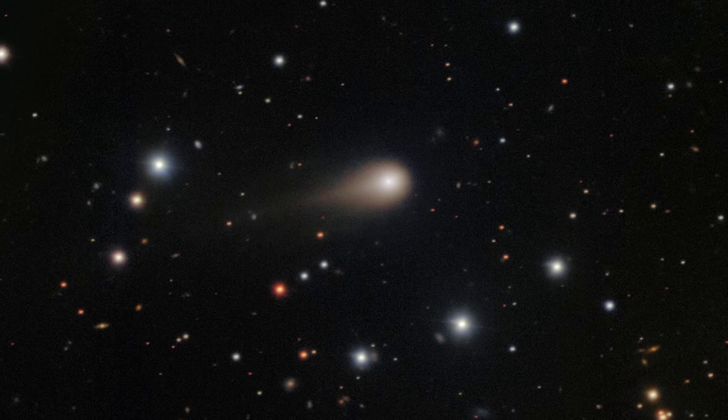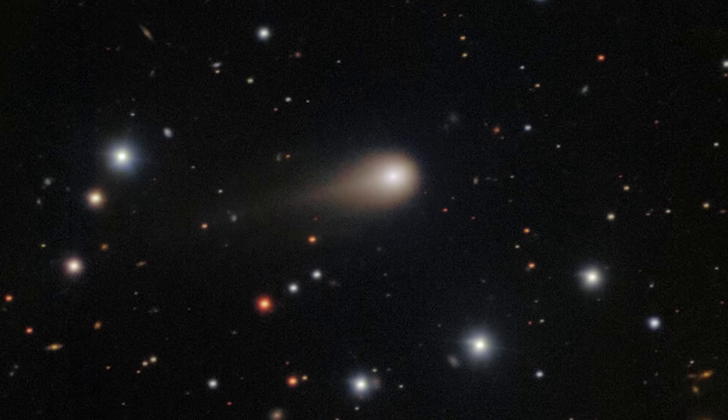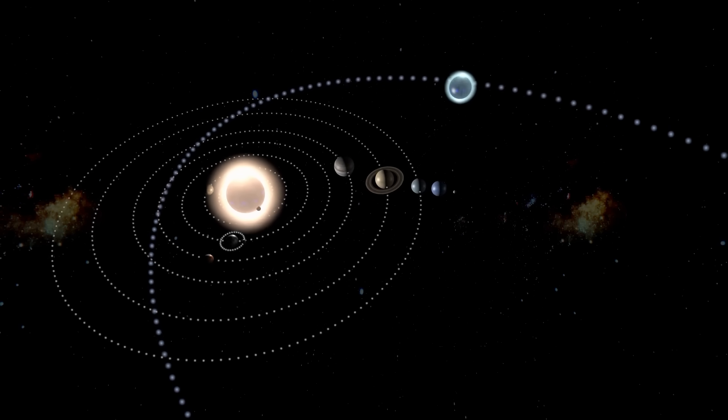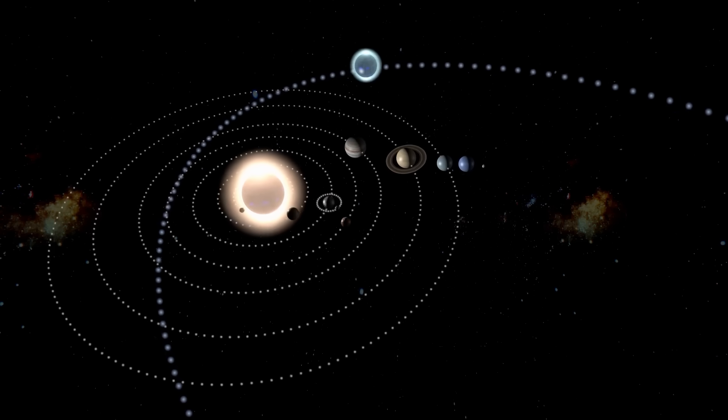Early estimates placed its heliocentric velocity at more than 209,000 kilometers per hour. The object was on a steep trajectory through the inner solar system, heading toward the sun's glare, before it would sling outward again toward the stars.